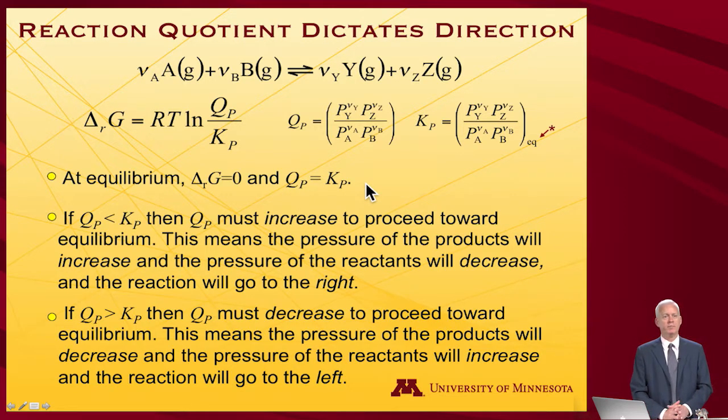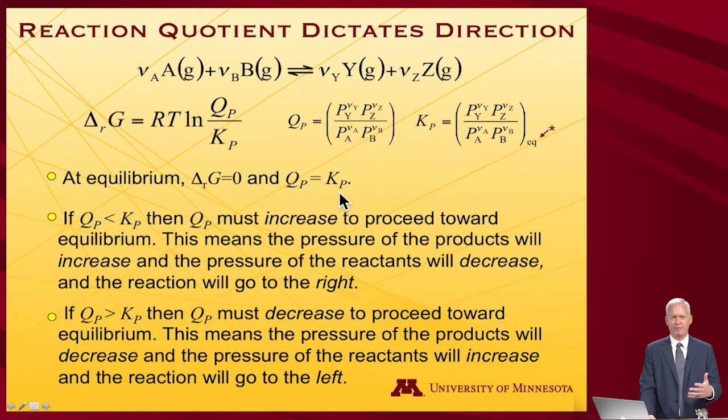Well, at equilibrium, delta R of G is equal to 0. So it's the case that Q sub P equals K sub P. And we've already sort of emphasized that.